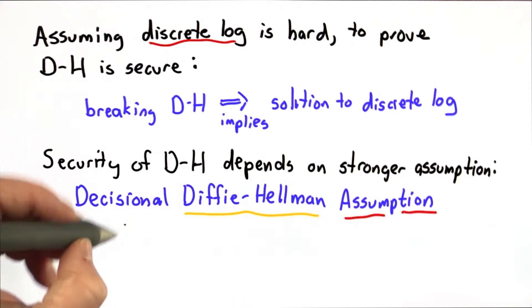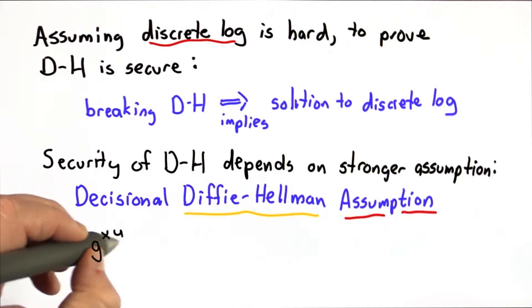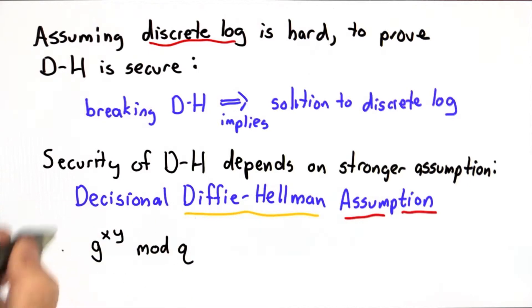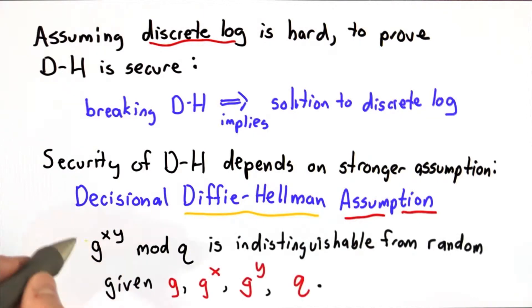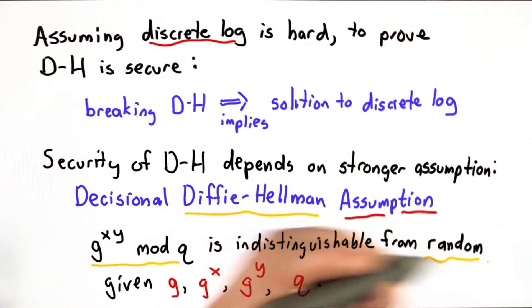And what we're relying on is this property: that g^xy mod q, and this is how we're computing the key, when the xy values, one is a secret value and one is the value that was sent in the previous message. And the assumption is that this value, which is g^xy mod q, and that's the value that's computed as the key in the Diffie-Hellman protocol, is indistinguishable from random even to an attacker who knows g, g^x, g^y, and q. These are the messages that would be intercepted.